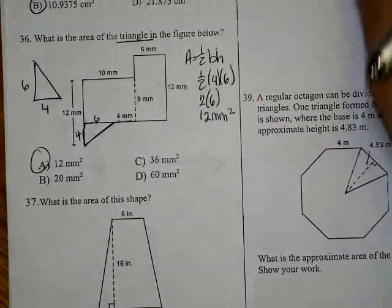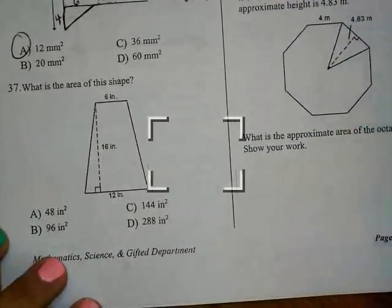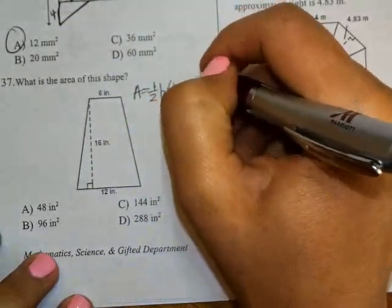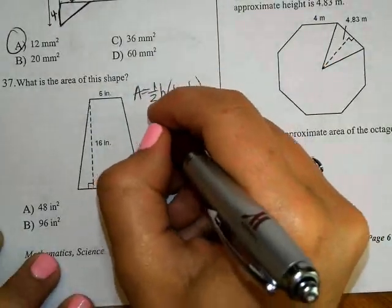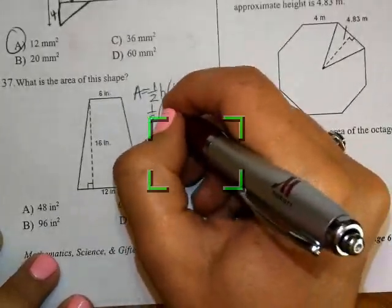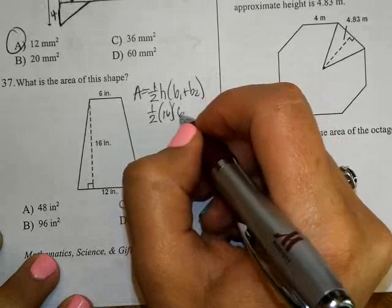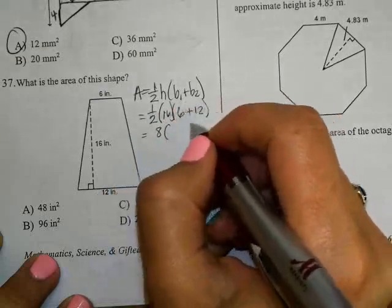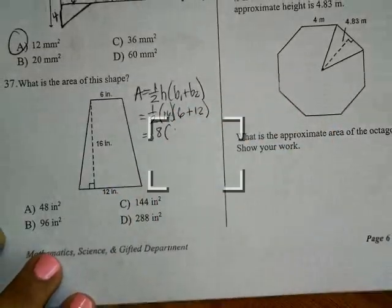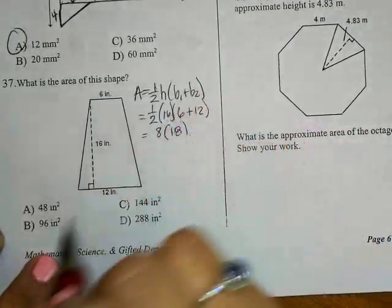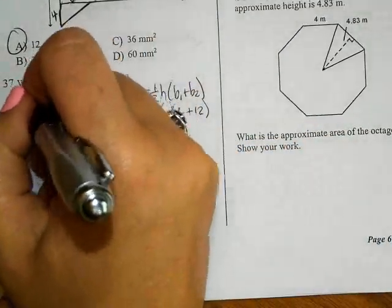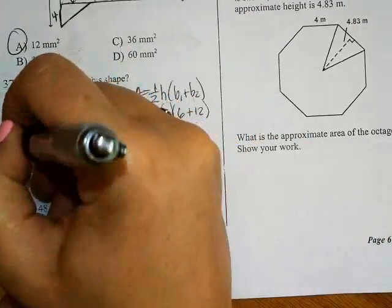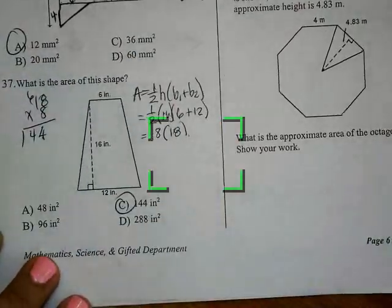What's the area of this shape? Well, these formulas you're not going to be expected to memorize. One-half, the height of my trapezoid is 16. My first base is 6 and 12. Half of 16 is 8. See how I'm breaking that down easily? 6 plus 12 is 18. You're technically only multiplying 8 times 18, which equals 144 inches squared.